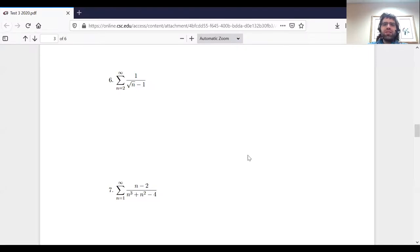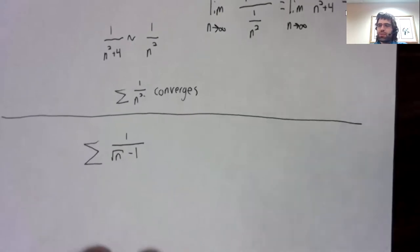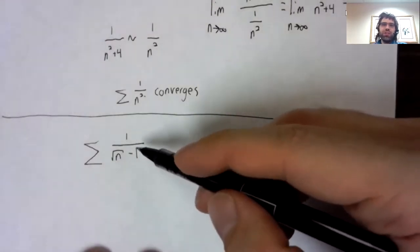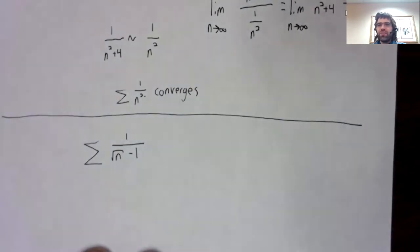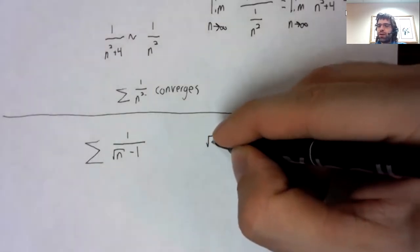Number six might also be doable using the limit comparison test, but let's try something different. And again, this is going to be done in just two lines, which doesn't make it easy. The hard part of the problem or the challenging part is recognizing how to go about it.